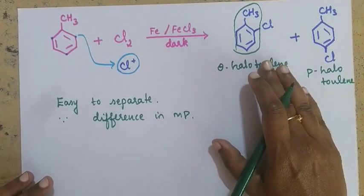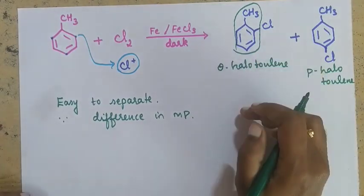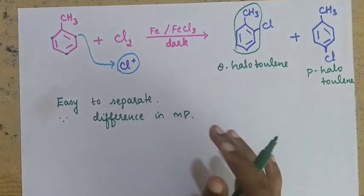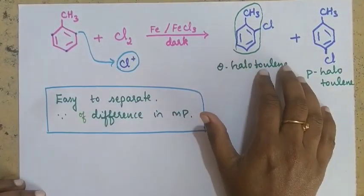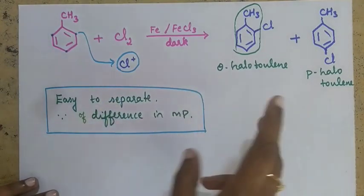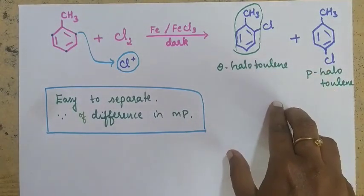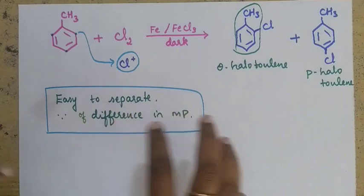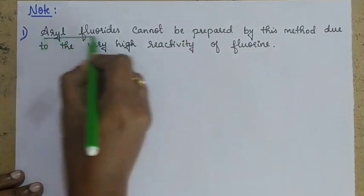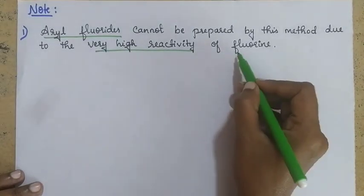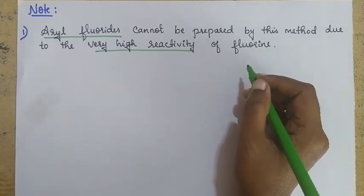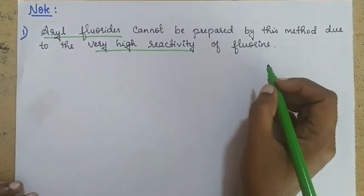This method is only for chlorine and bromine. Aryl fluorides cannot be prepared by this method due to the very high reactivity of fluorine. Fluorine is highly reactive in this process, so it is not used in the electrophilic substitution method, and that is why we cannot prepare aryl fluoride using electrophilic substitution.